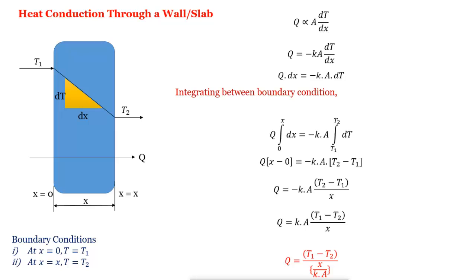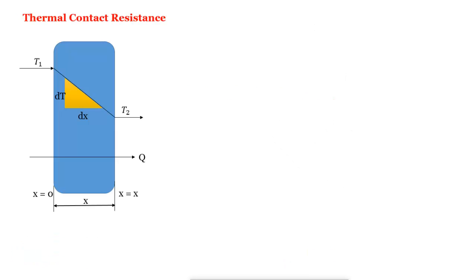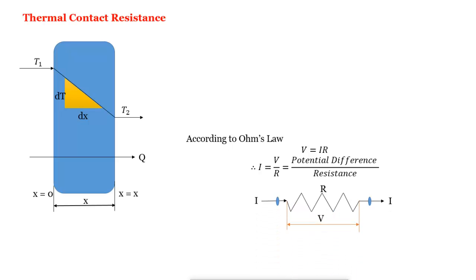Now we understand the thermal contact resistance. We have the same slab. But we know that in electric conduction, according to Ohm's law, V is equal to IR. That means I equal to V by R, means the potential difference upon resistance. Means if the current is flowing in the conductor, that will provide a potential difference and resistance.